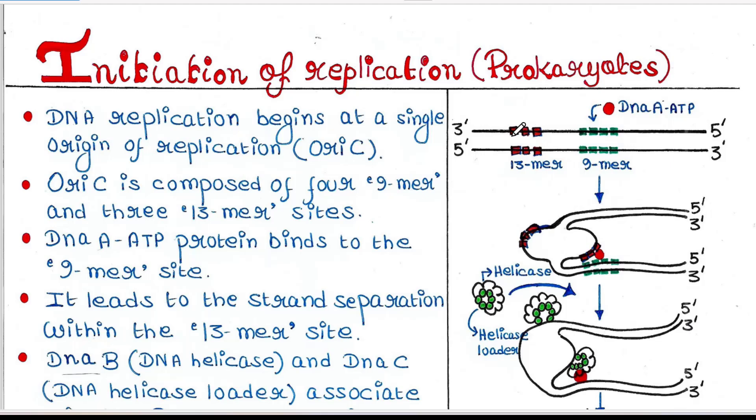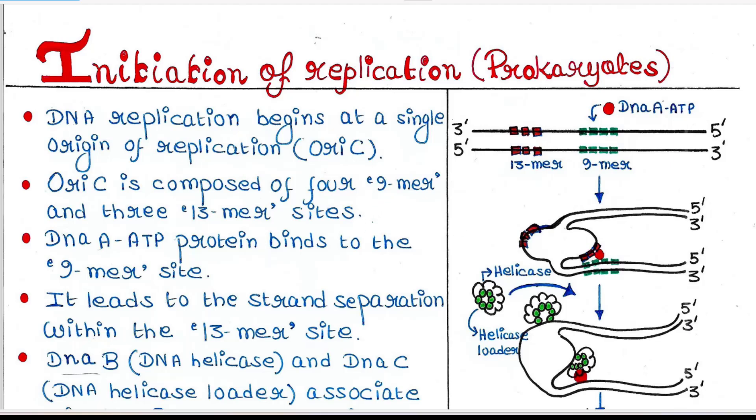This whole portion is called OriC, where replication begins. DNA A-ATP protein binds to the 9-mer site and it leads to the strand separation within the 13-mer site. The replication bubble gets created after strand separation.